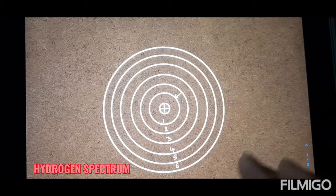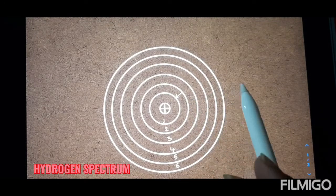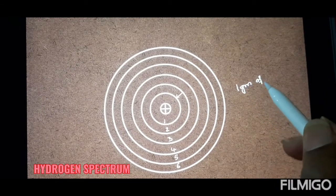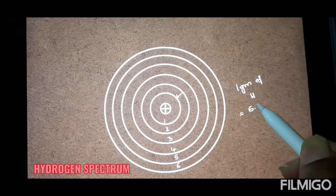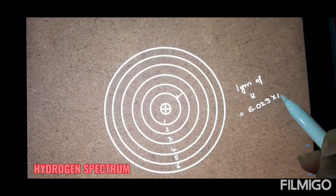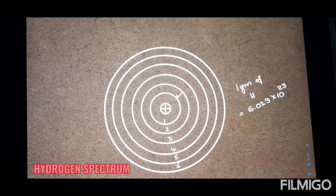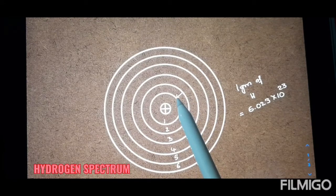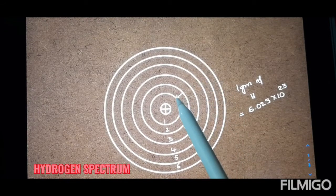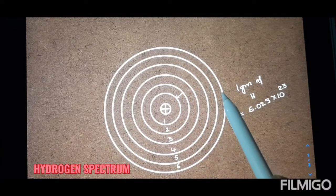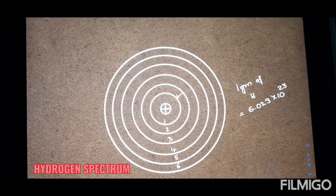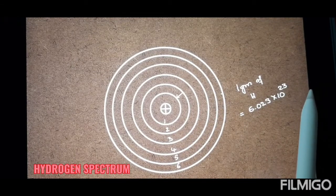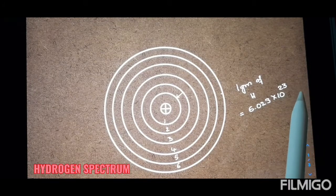The explanation is simple: a hydrogen sample contains a large number of hydrogen atoms. One gram of hydrogen contains 6.023 × 10²³ hydrogen atoms. In one hydrogen atom, the electronic transition takes place from the second orbit to the first orbit. In another atom, it may take place from the seventh to the first orbit. In yet another hydrogen atom, the transition takes place from the seventh to the second orbit. So several possibilities exist.